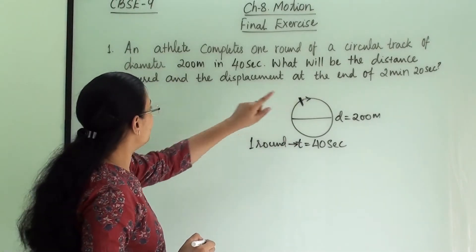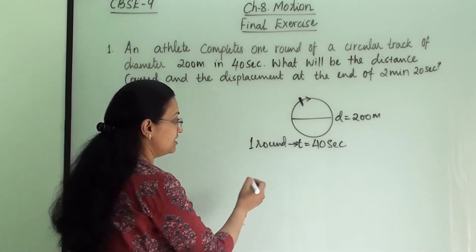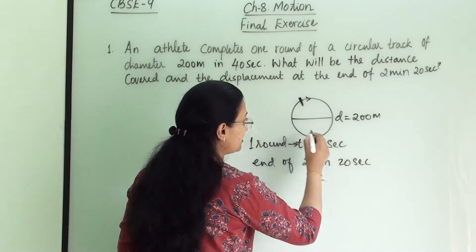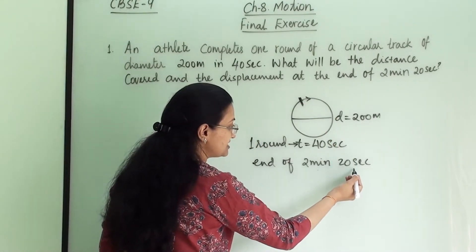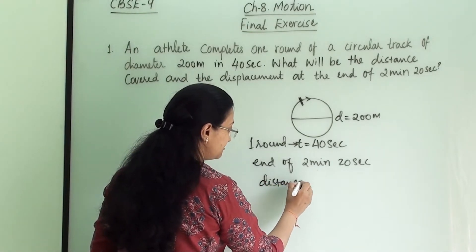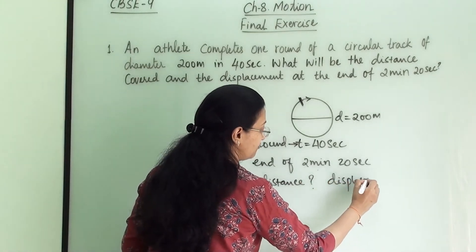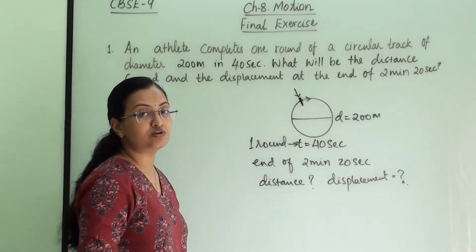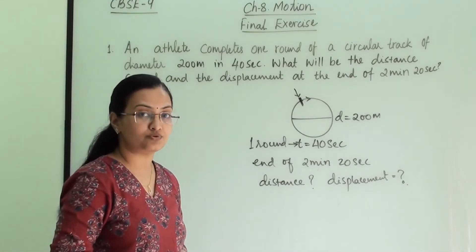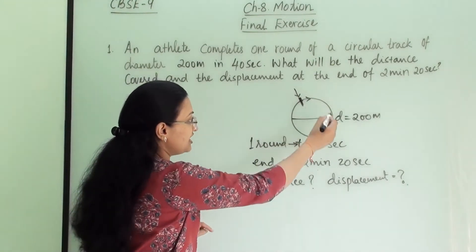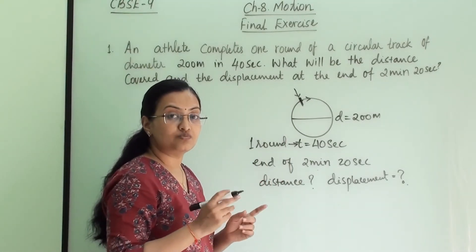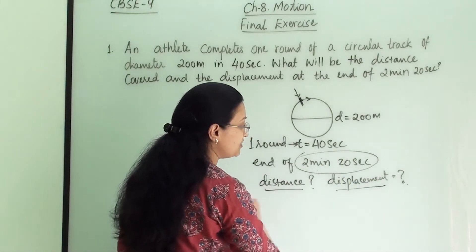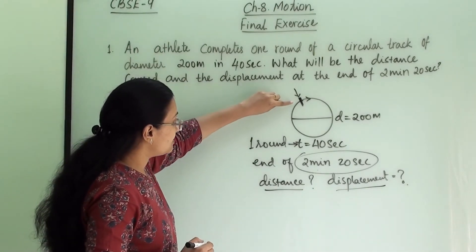They are asking: what will be the distance covered and displacement at the end of 2 minutes 20 seconds? After 2 minutes 20 seconds, where will the athlete reach, how much distance will he cover, and how much displacement will there be? Once he starts and comes back to the same position, his displacement will be 0. If the final position and initial position are the same, displacement is 0. So if he takes one full round, he covers some distance but his displacement will be 0.